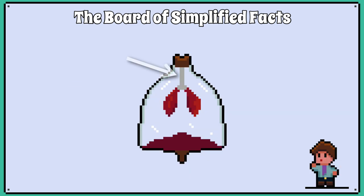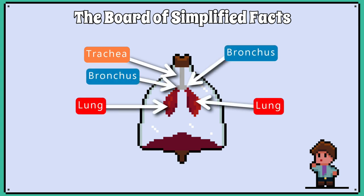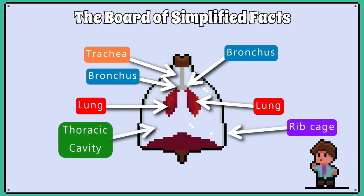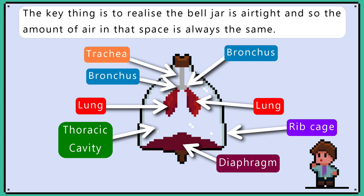The tube entering the bell jar represents the trachea, which then splits into the bronchi. The balloons represent the lungs. The bell jar casing represents the rib cage. The rubber sheet represents the diaphragm.